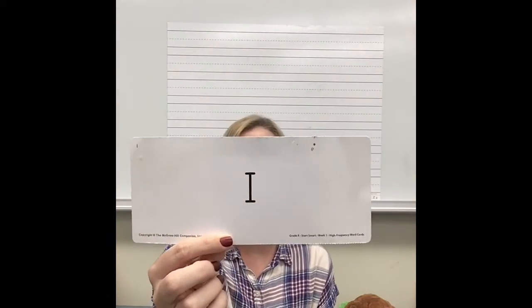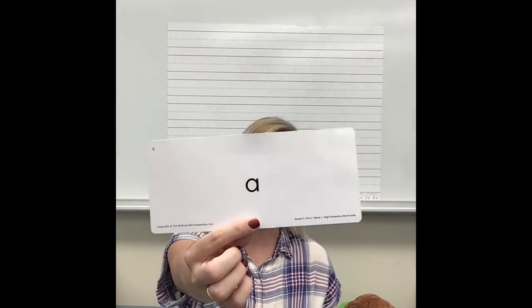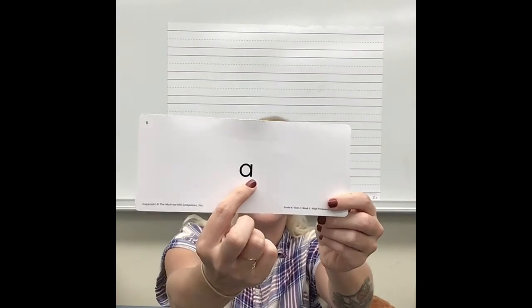This is 'me.' To spell 'me' we need M, E. Spell 'me' with me — let's spell it like a rock star: M, E — me. M is a consonant. E is a vowel. I bet you know what this word is — this is the word 'I.' I is the word I use when I'm talking about myself. I is just spelled using the letter I. And this word, 'A,' is spelled just using the letter A.